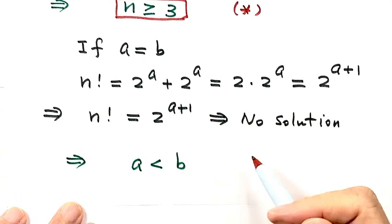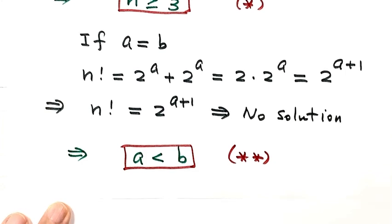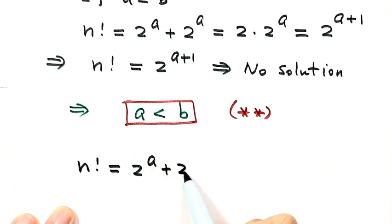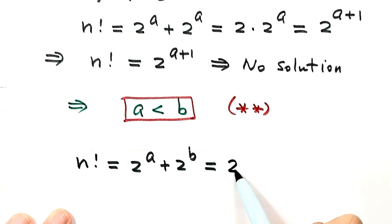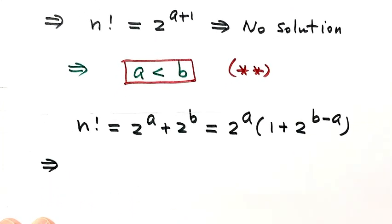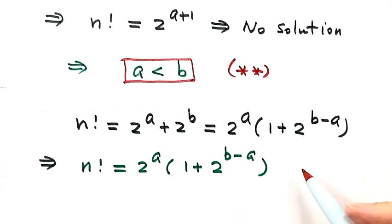Since a < b, the two terms on the right share a common factor of 2^a. Factoring it out gives n! = 2^a × (1 + 2^(b−a)). Mark this equation with three stars.